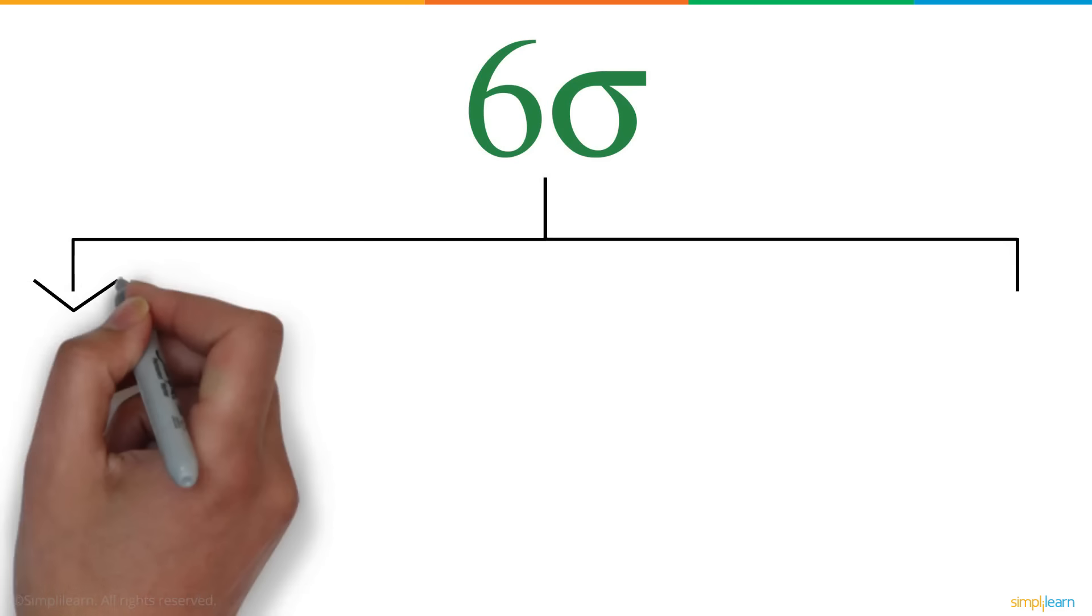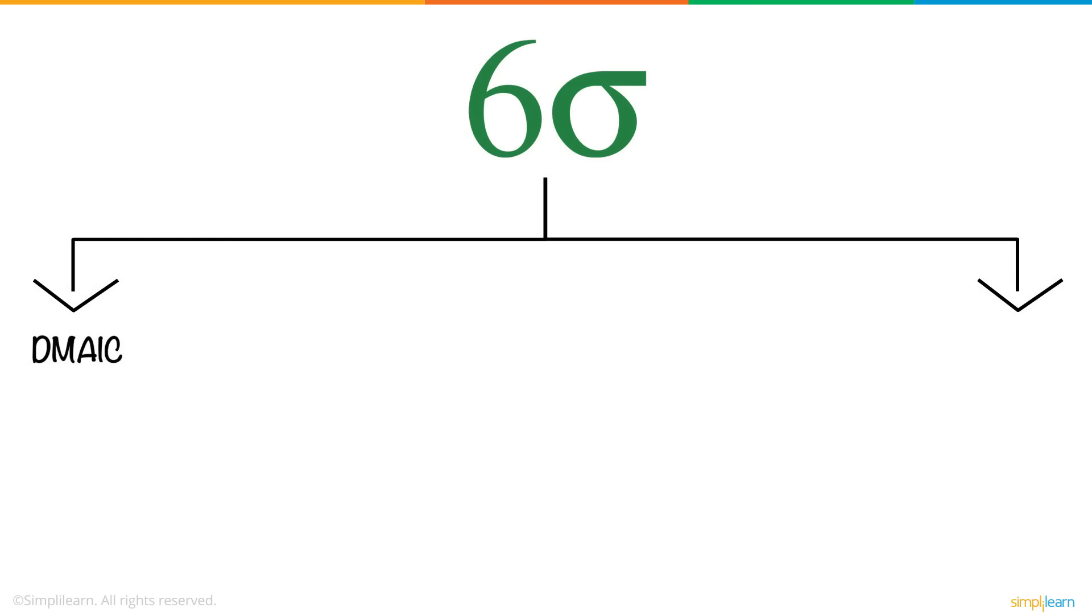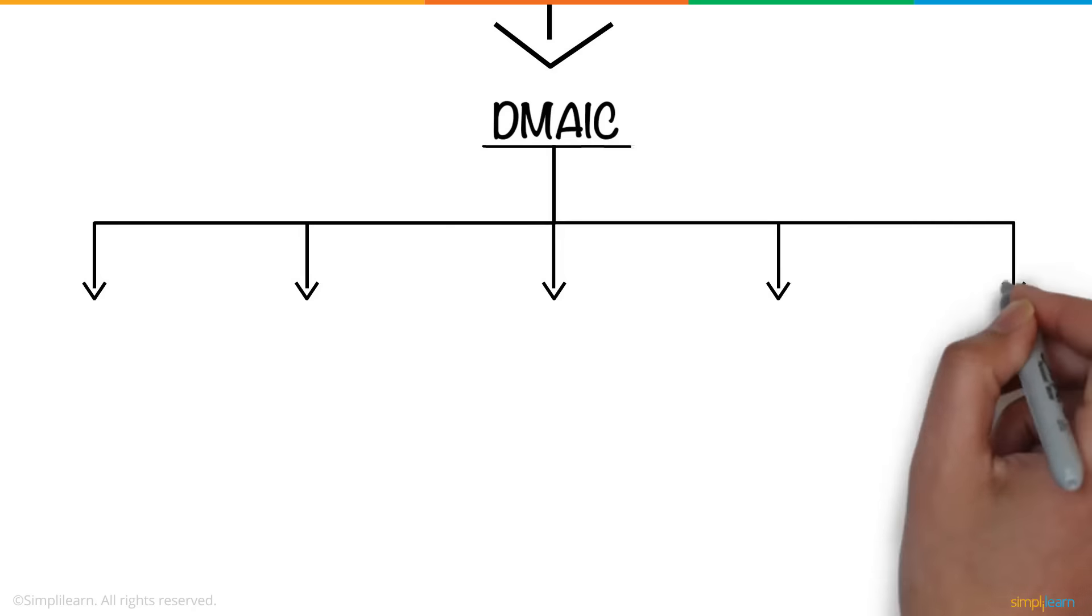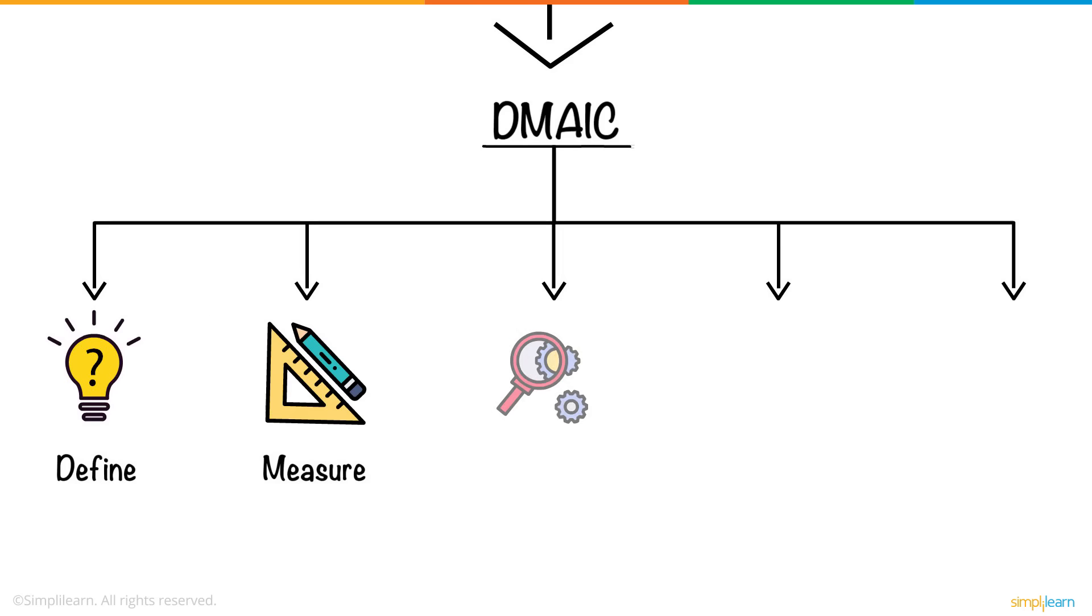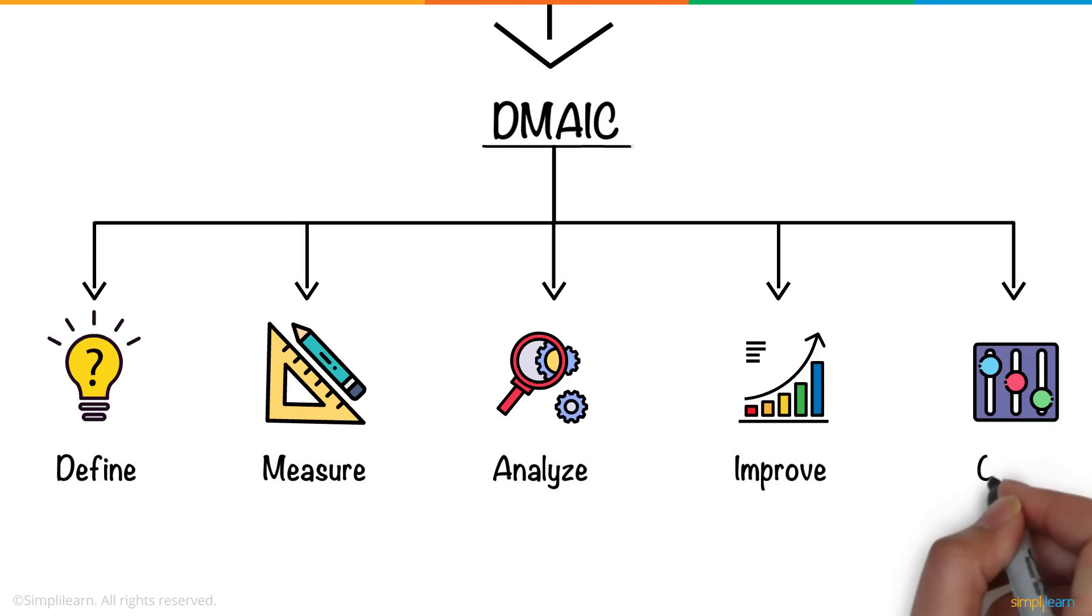Six Sigma has two major methodologies, DMAIC and DMADV. Let's look at the first methodology. DMAIC is an acronym for Define, Measure, Analyze, Improve, and Control.